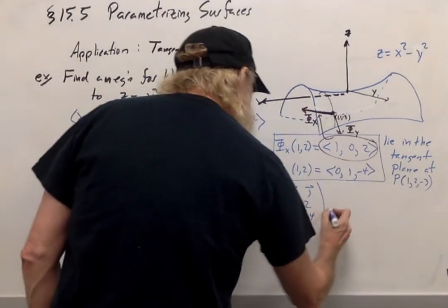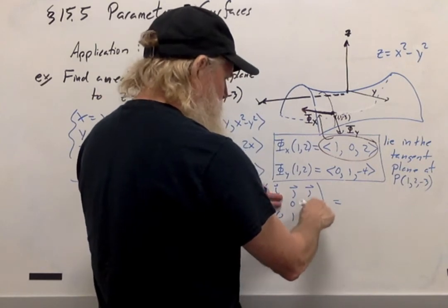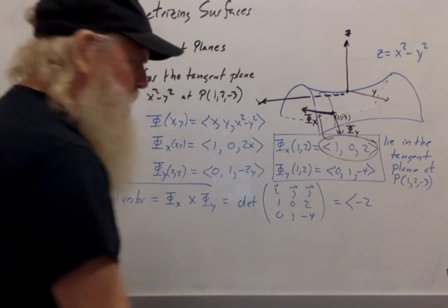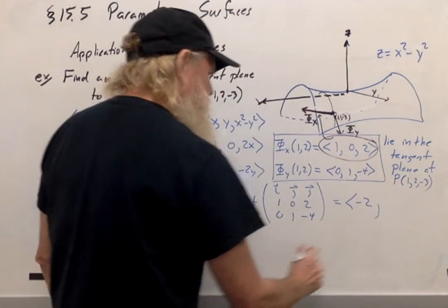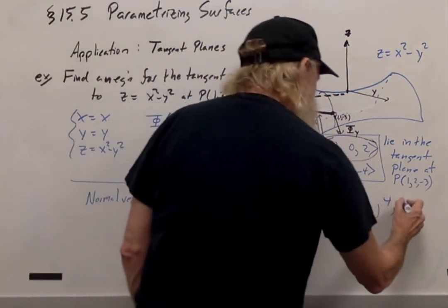Taking that cross product, let's see what we get. I'll get 0 minus 2, so -2, then 0 minus negative 4 is 4, and then 1.